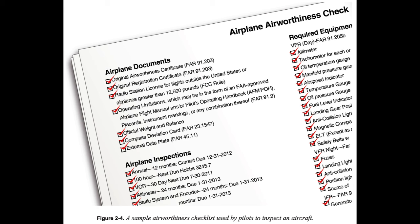A review determines if the required maintenance and inspections have been performed on the airplane. Any discrepancies need to be addressed prior to flight. Once the pilot has determined that the airplane's logbooks provide factual assurance that the airplane meets its airworthiness requirements, it is appropriate to inspect the airplane visually. The visual pre-flight inspection should begin while approaching the airplane on the ramp. The pilot should make note of the general appearance, looking for discrepancies such as misalignment of the landing gear and airplane structure, as well as distortions of the wings, fuselage, and tail, and any staining, dripping, or puddles of fuel or oil.